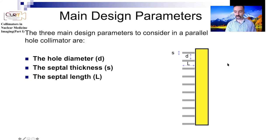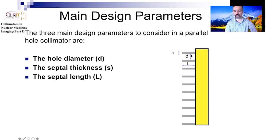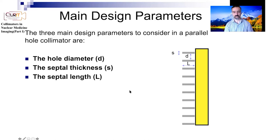The right collimator is contextual — it depends on the application. For a parallel hole collimator, there are three main design parameters to consider: the hole diameter d, the septal thickness s, and the septal length l, which is the height of the collimator.